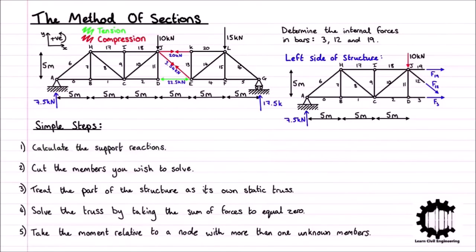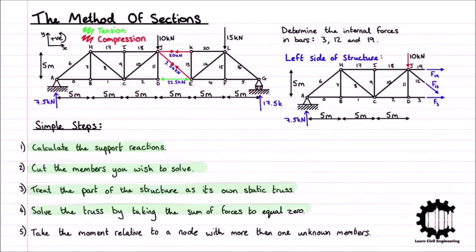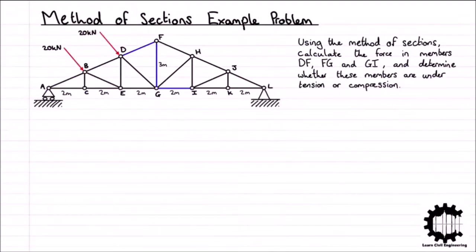In a previous video, we covered the theory for the method of sections in detail, and we saw that the general steps include: starting by calculating the reaction forces at the supports, then dividing the structure into two parts by making a cut through the members we want to solve, then treating each side of the truss as its own static structure and solving one of the substructures by taking the sum of all forces to equal zero, and finally taking the moment relative to a node with more than one unknown member. With that summary, we'll begin to solve our example problem.